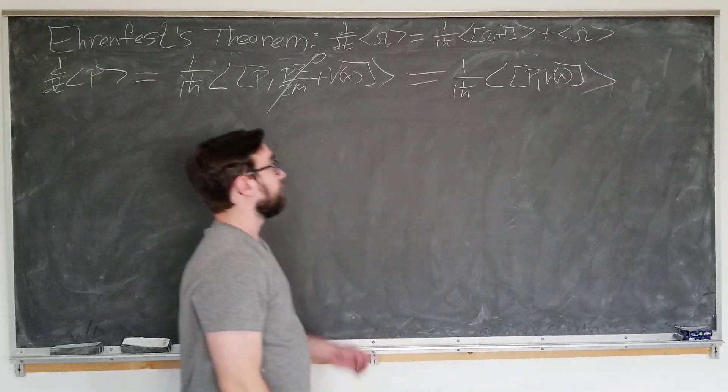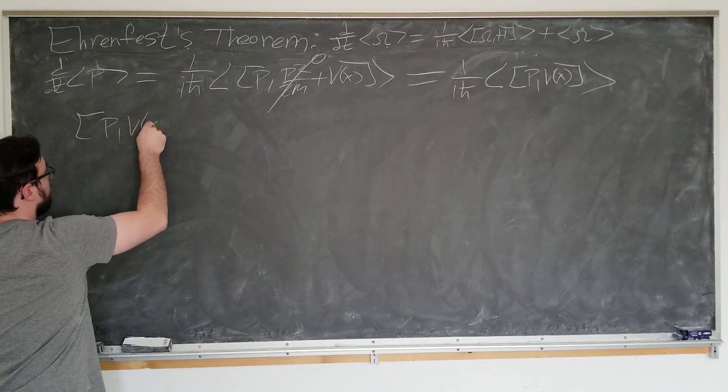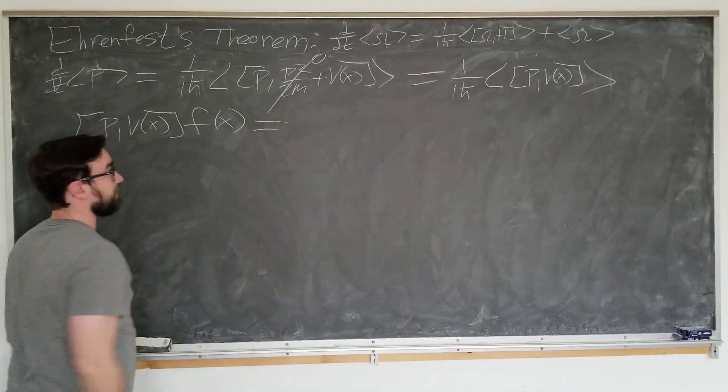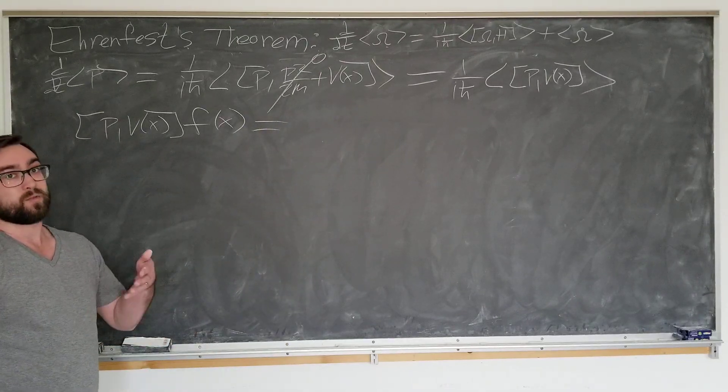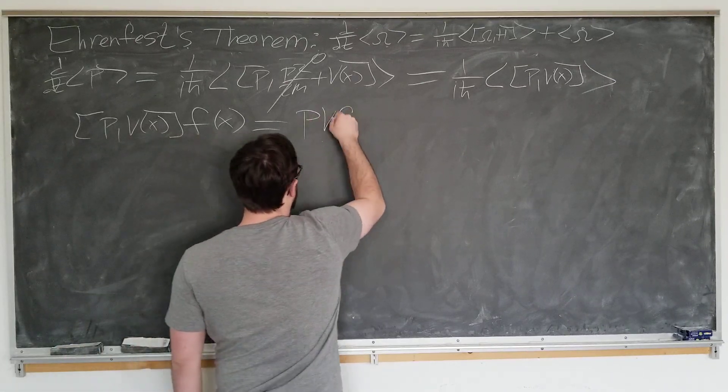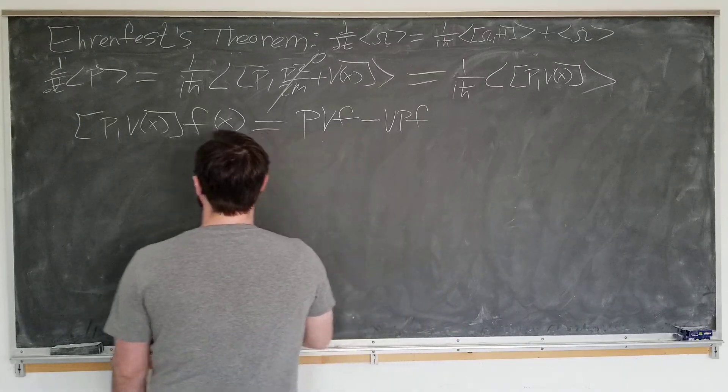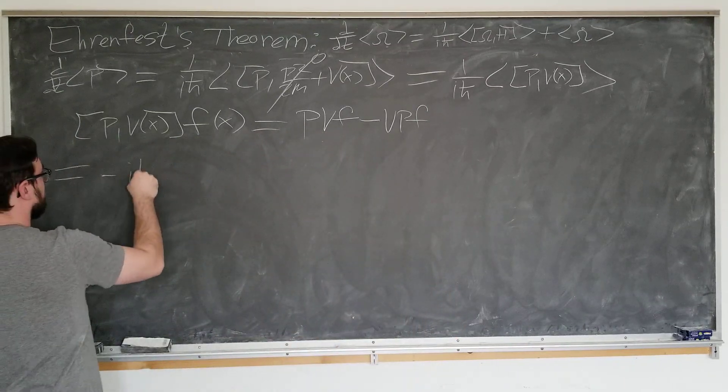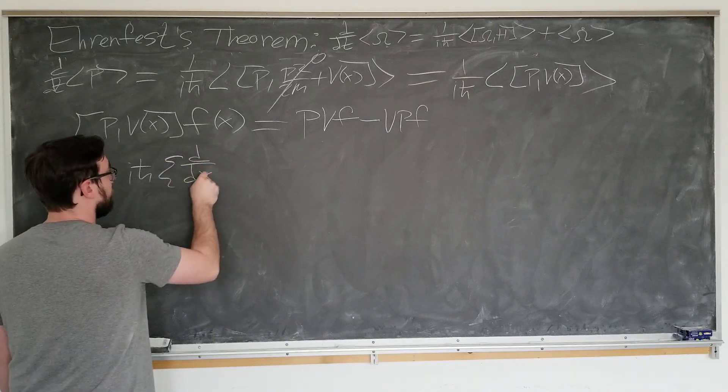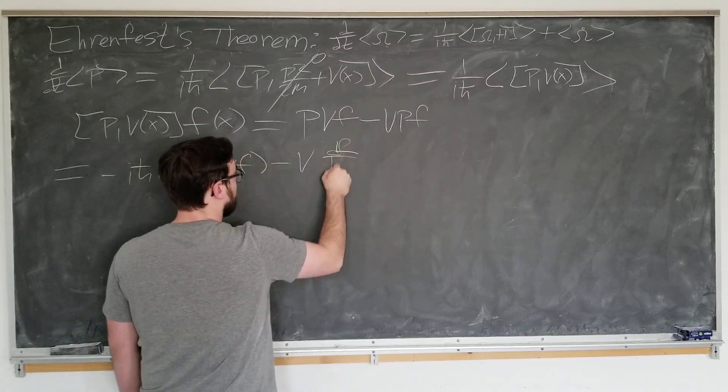Let's go ahead and derive this in the ordinary way. We need to find the commutator of p with v of x. Go ahead and operate on a test function f of x. Incidentally, this is exactly how you derive x with p equals i h bar. Same thing: p v f minus v p f, which is common factor minus i h bar d by dx, v f minus v d f by dx.